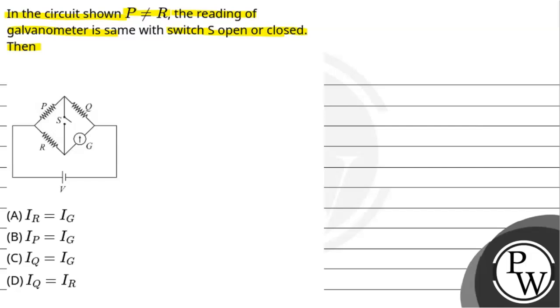The reading of the galvanometer is the same whether switch S is open or closed. Here we have a bridge with resistances P, Q, R, and G, where S is the switch.